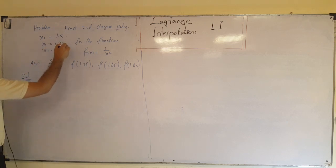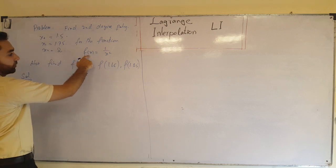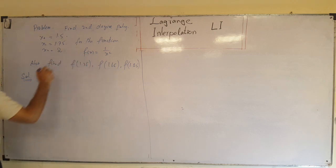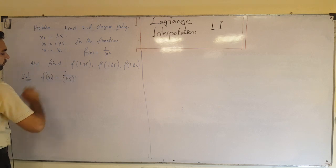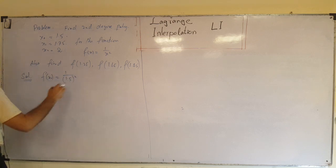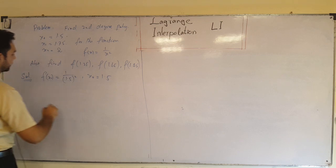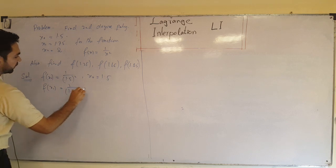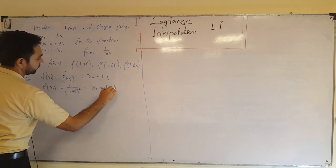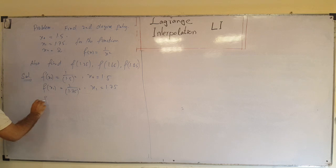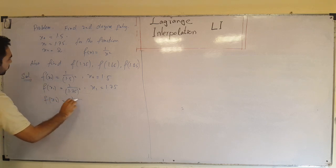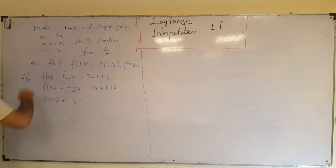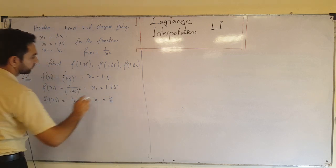The first thing is we have x₀, x₁, and x₂ but we don't have f(x₀), f(x₁), and f(x₂), so we have to find those. f(x₀) = 1/(1.5)², f(x₁) = 1/(1.75)², and f(x₂) = 1/(2²) = 1/4, when x₂ = 2.